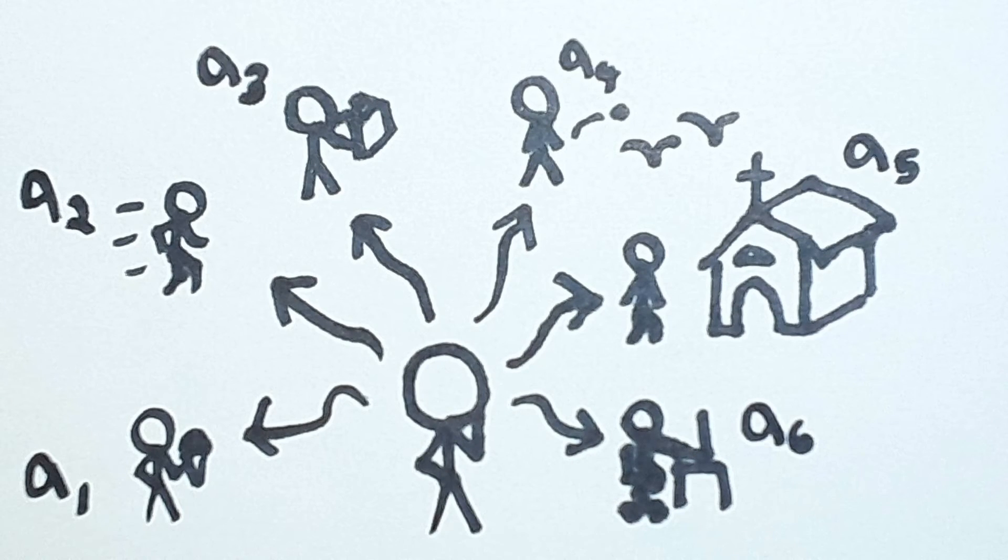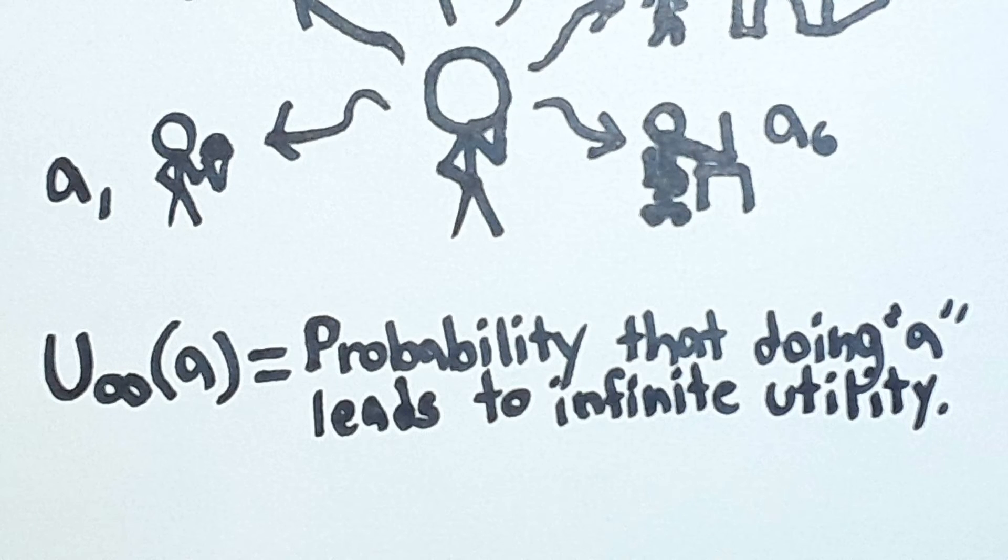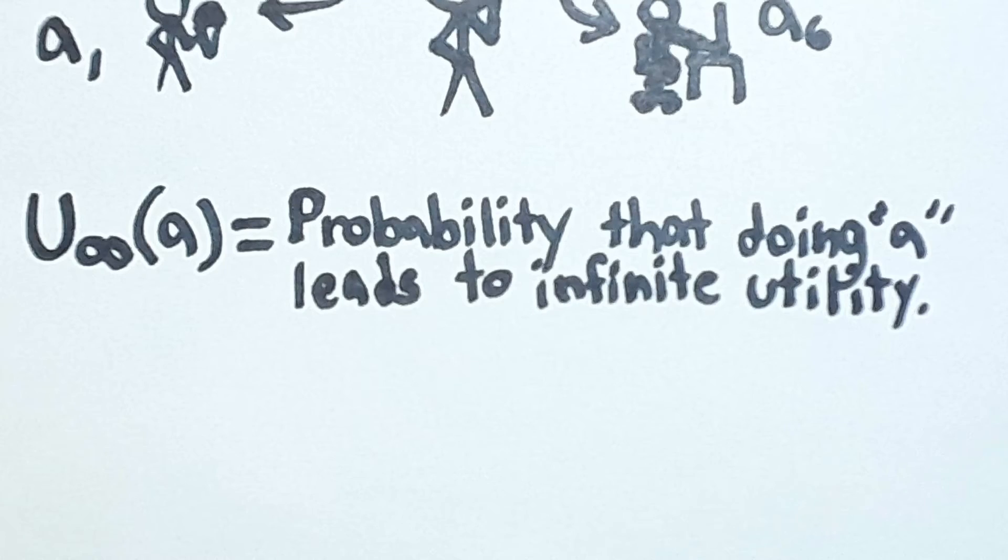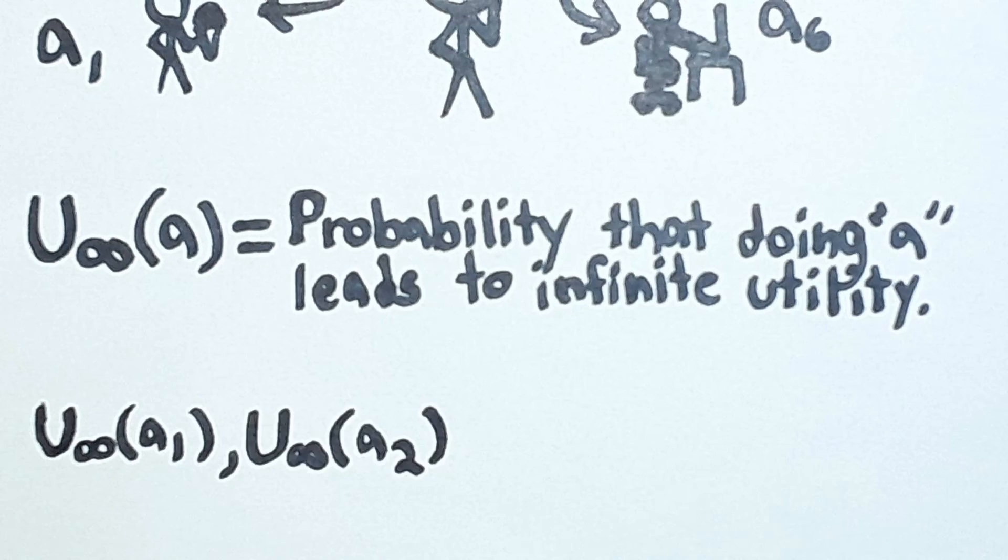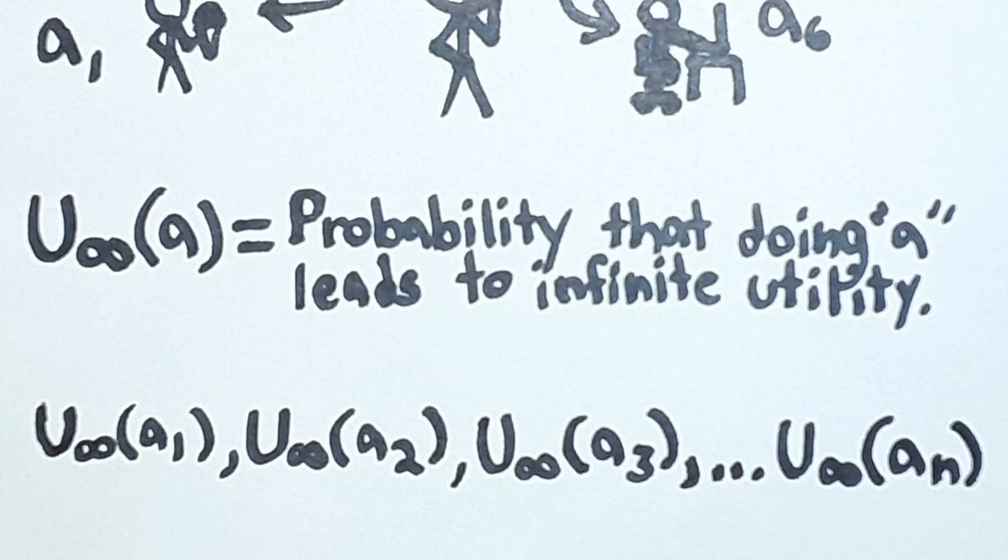Now, let's define the function U of A as a probability that doing A will lead to infinite utility for you at some point. Now, whenever you are faced with any decision ever, you should rationally try to maximize utility by comparing the probability that all the actions available to you will give infinite utility, and you should go with the action that has the highest probability of giving infinite utility.